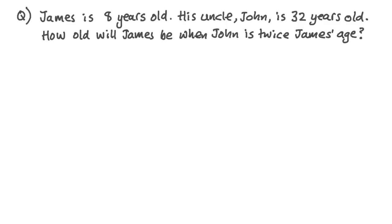OK, here's the puzzle. James is eight years old. His uncle, John, is 32 years old. How old will James be when John is twice James's age? So it's a ratio and proportion question, and it jumps from a very concrete statement about James's and John's ages now to a bit of an abstract question about a future time when John will be twice as old as James.